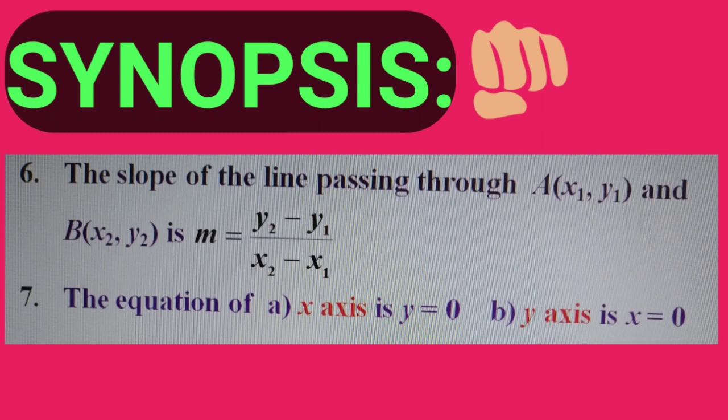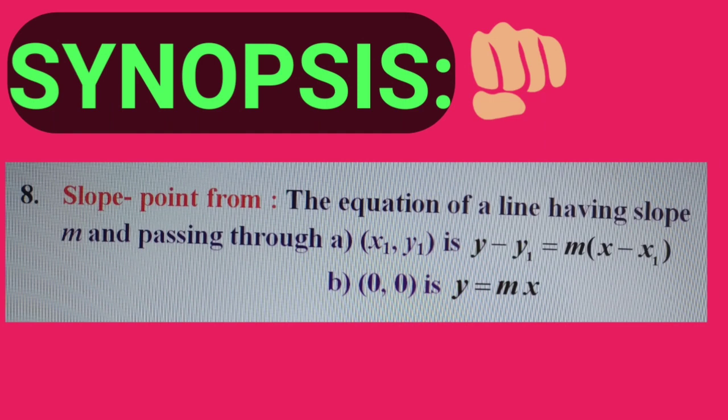The equation of the x-axis is y equals 0. The equation of the y-axis is x equals 0. Next: slope-point form. The equation of a line having slope m and passing through (x1, y1) is y minus y1 equals m times (x minus x1).